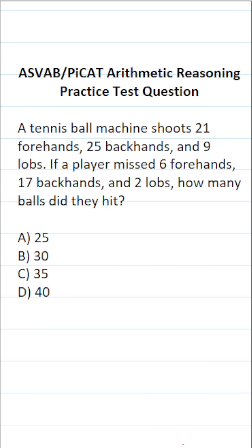This arithmetic reasoning practice test question for the ASVAB and PiCAT says, the tennis ball machine shoots 21 forehands, 25 backhands, and 9 lobs. If a player missed 6 forehands, 17 backhands, and 2 lobs, how many balls did they hit?